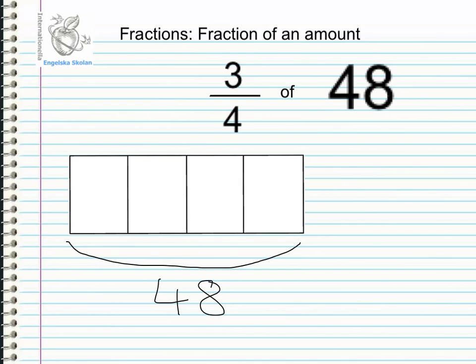The question is asking us to find three quarters. So the whole number, forty-eight, is made up from four parts. Using my mental division I know that forty-eight divided by four is twelve. So in each part of my whole number I will have a value of twelve.